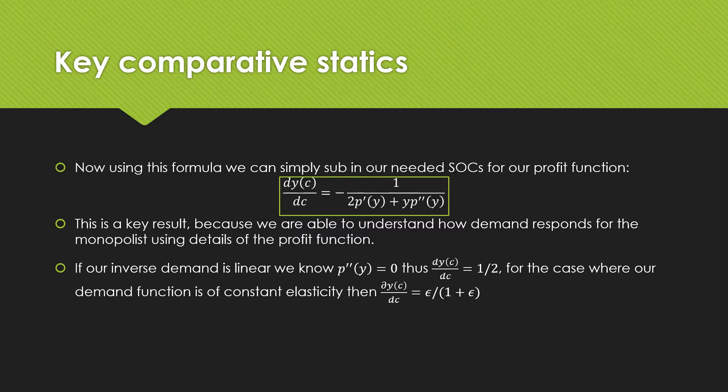Now using this formula we simply sub in our needed second order conditions from our profit function and we get the following: our change in output demanded with respect to output cost is equal to -1/(2p' + yp''). This is a key result because we're able to understand how our demand responds for a monopolist using details of the profit function. If our inverse demand is linear, we know that the second derivative of our inverse demand is zero, and thus this derivative result is equal to -1/2, meaning that demand responds by one half of that value with respect to cost.